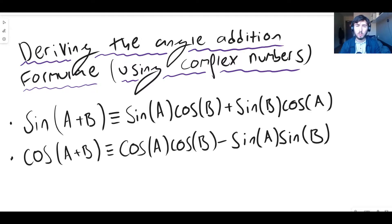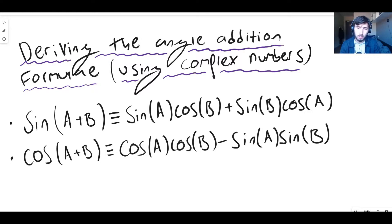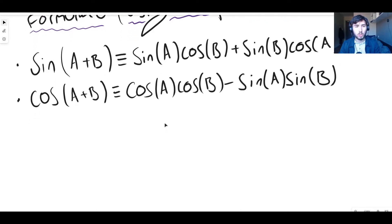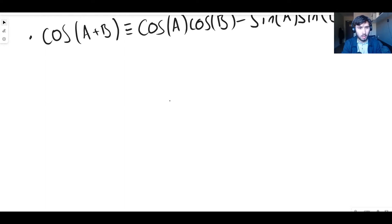The angle addition formulae — sometimes called the compound angle formulae — are as follows. Sine of a plus b, where a and b are just two angles, is equal to sine a times cos b plus sine b times cos a. Then there's the one for cosine: cos of a plus b is cos a cos b minus sine a sine b. We're going to derive these two formulae.